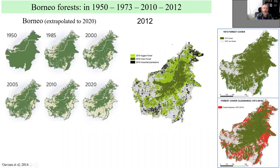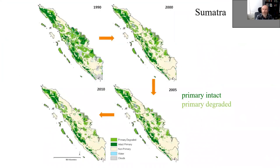In the longer term the situation is even worse. A time series for Borneo shows it was completely forested in the 1950s. Now intact forests remain only in high-elevation areas in the center, while lowlands have been largely cleared — much converted to industrial plantations, with the remainder being selectively logged forest, which may or may not be harmful depending on logging intensity. The same cycle applies to Sumatra.